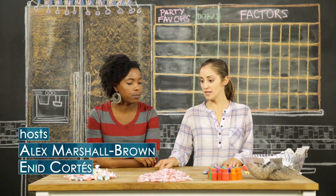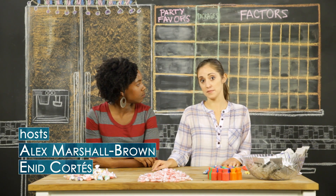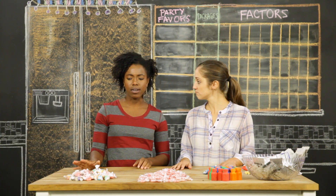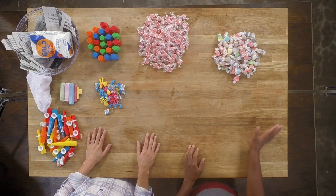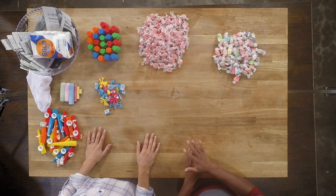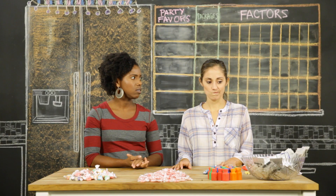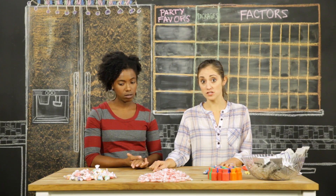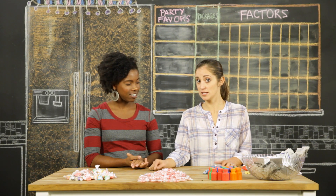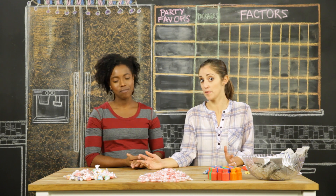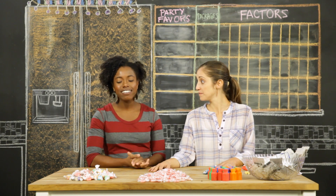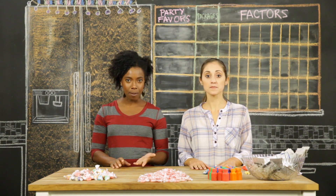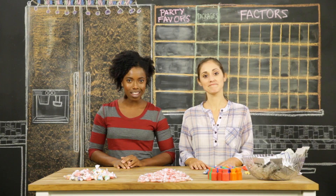I think we should make them all exactly the same so that nobody feels bad if theirs is different. That makes sense, but all the fillings are different amounts, so how do we divide them up equally? We can use the common factors of the different quantities, and that will ensure that each piñata has the same amount of filling. I see, so then the greatest common factor will tell us how many piñatas we can make. Right.